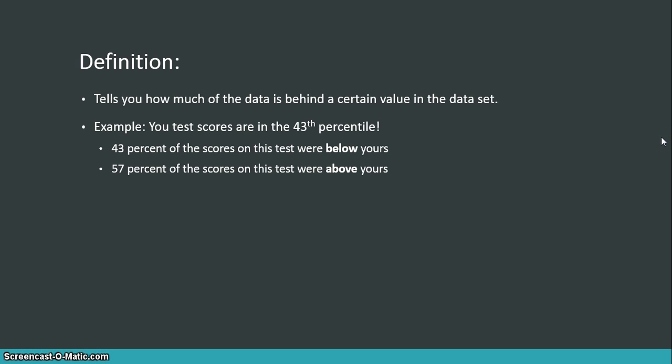If you've taken the SAT, ACT, or the COGAT, or some sort of test, they always like to express your score as a percentile. For example, let's say I get my test score back and it says I'm in the 43rd percentile. Well, that means 43% of the scores on this test were below my score. And, of course, because we know percents have to add up to 100, it would also mean that 57% of the scores were above mine.